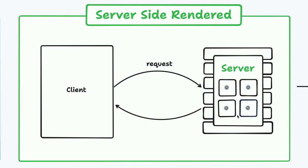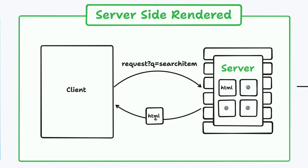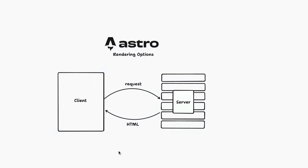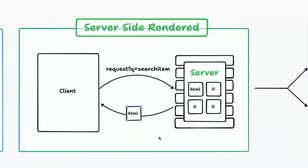The cool thing with SSR is you can actually have things on the request — for instance, a query for a search item. It will search that and then dynamically generate the HTML and spit it back. So it changes the code to HTML as it renders it, then sends that HTML back to the client. It's the same basic process, just with a little bit more dynamicness on the server.